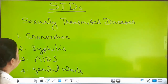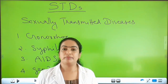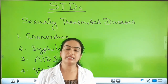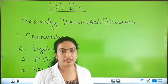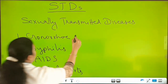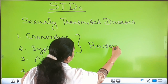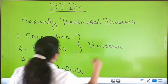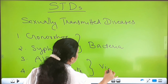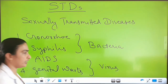These are the common STDs found in people who are having or committing unhealthy sexual contact. Gonorrhea and syphilis are bacterial diseases — these are caused by bacteria. And genital warts are viral diseases — these are caused by virus.